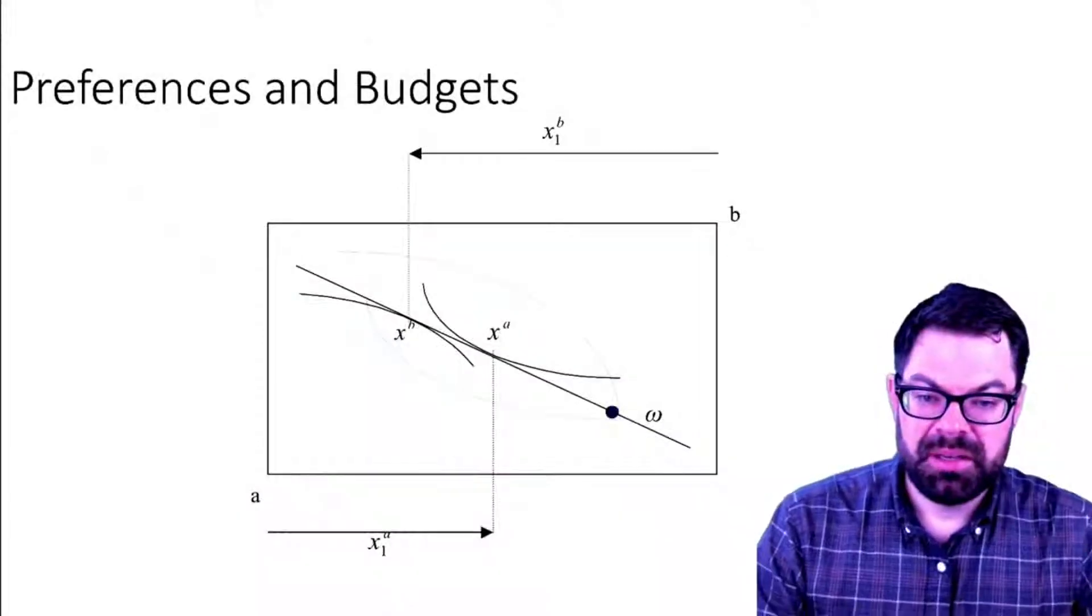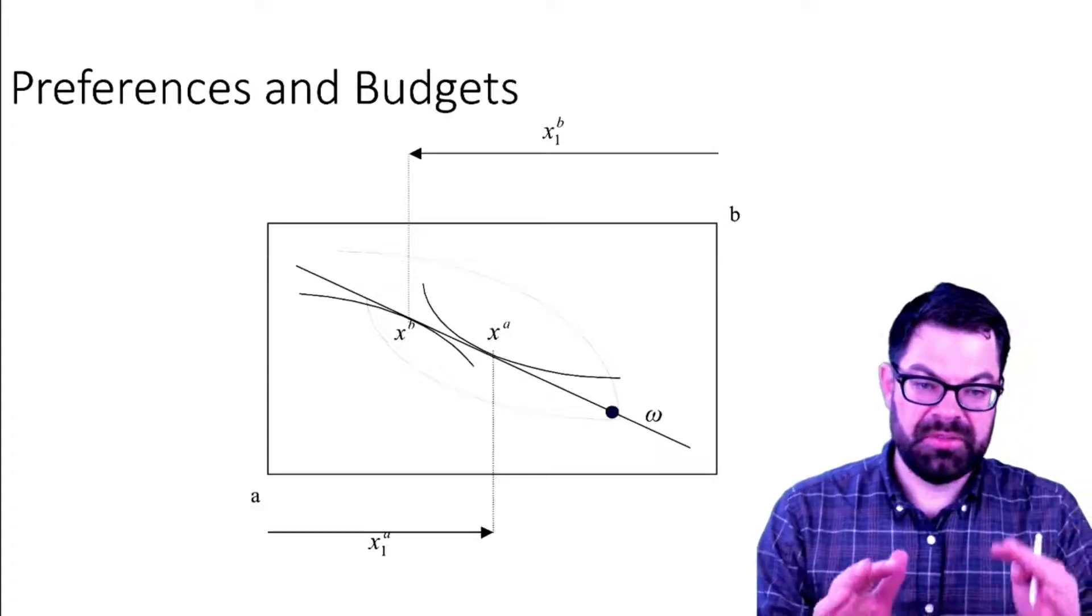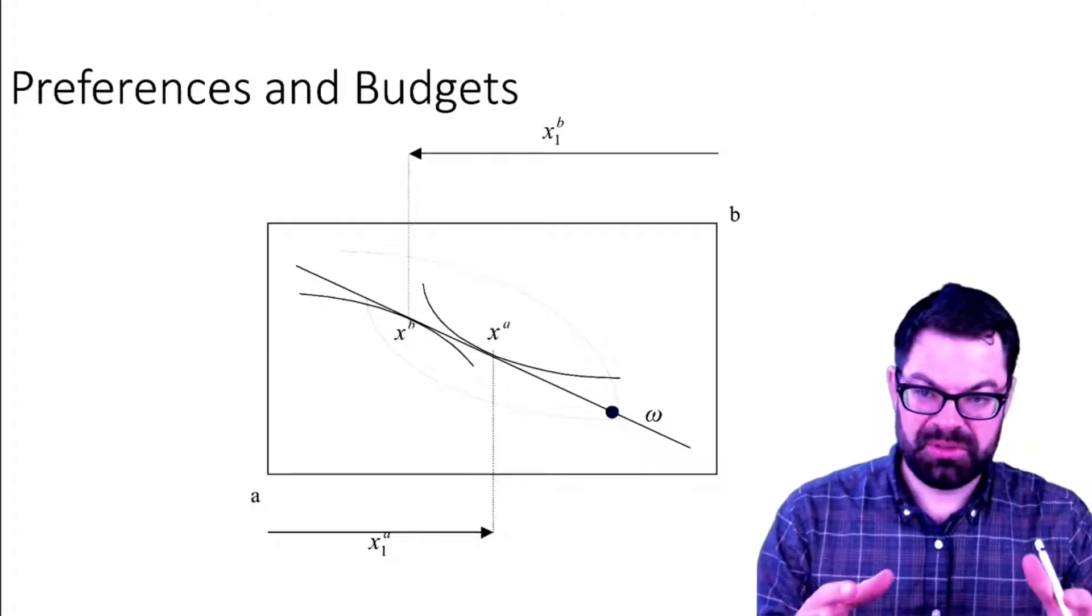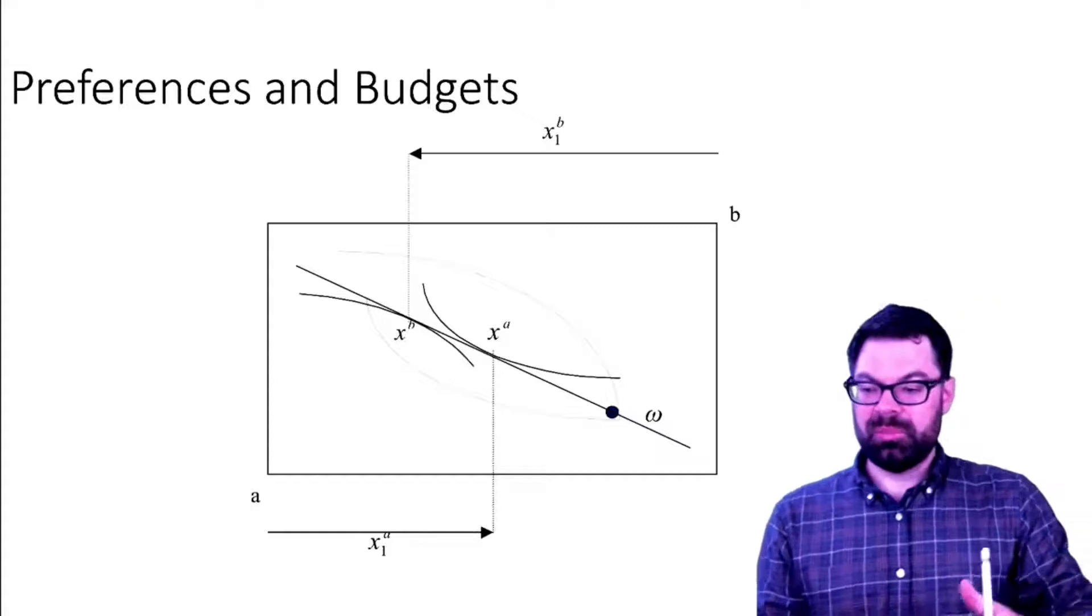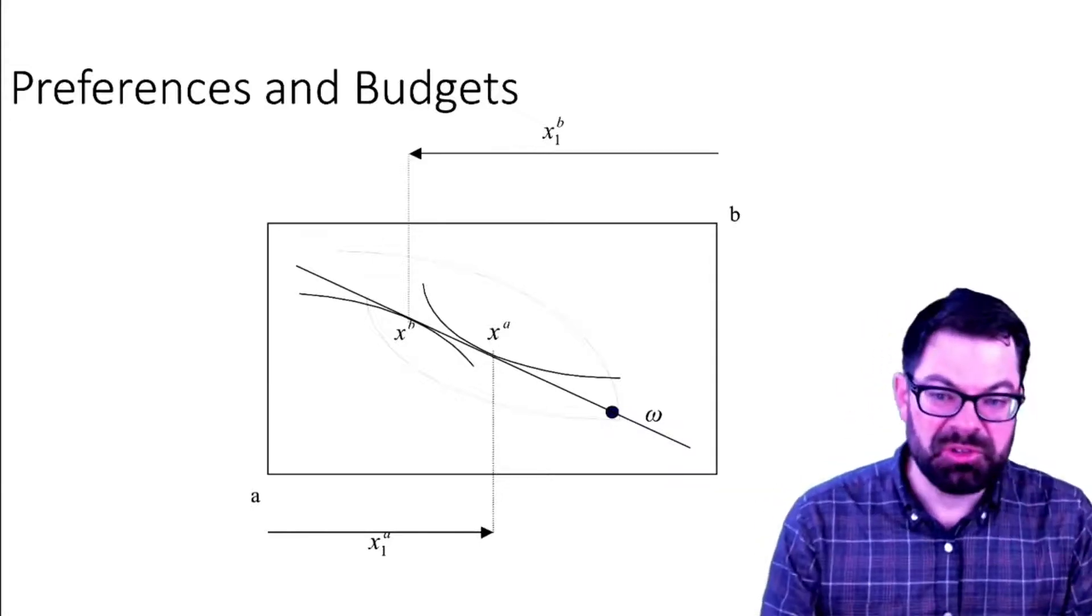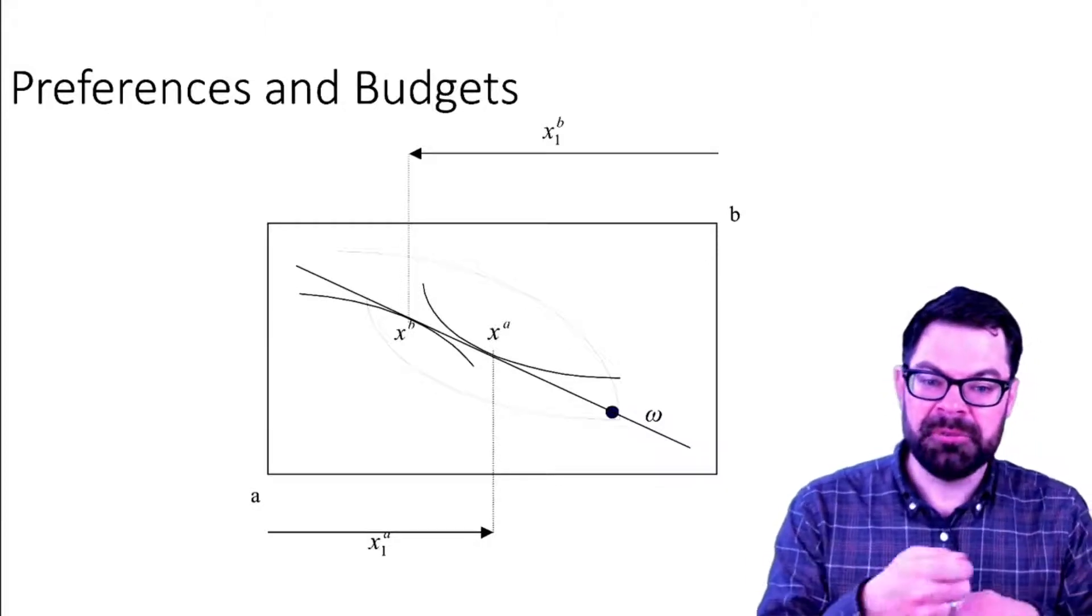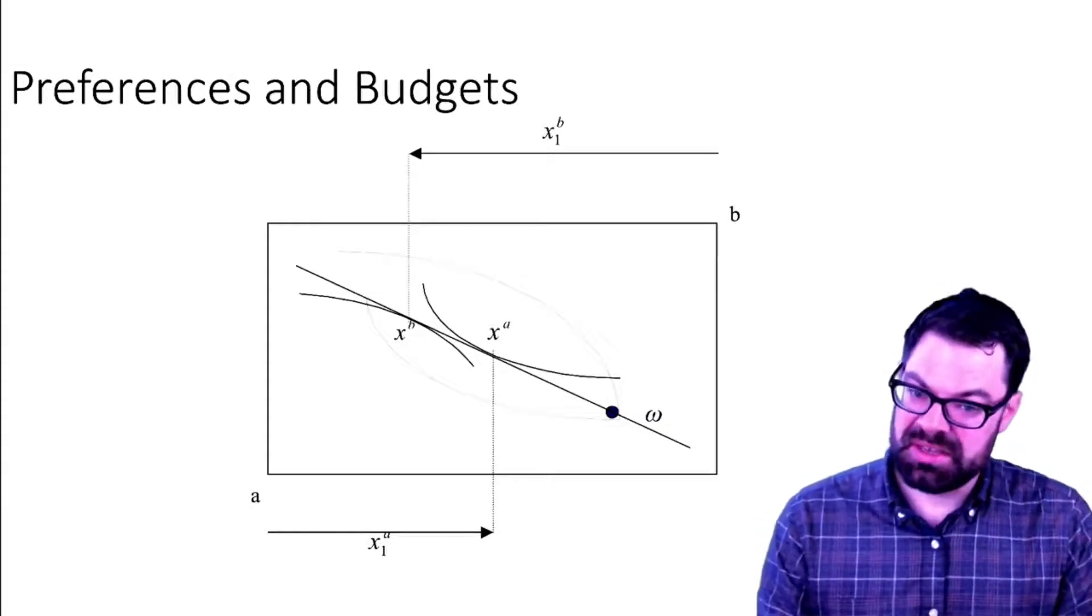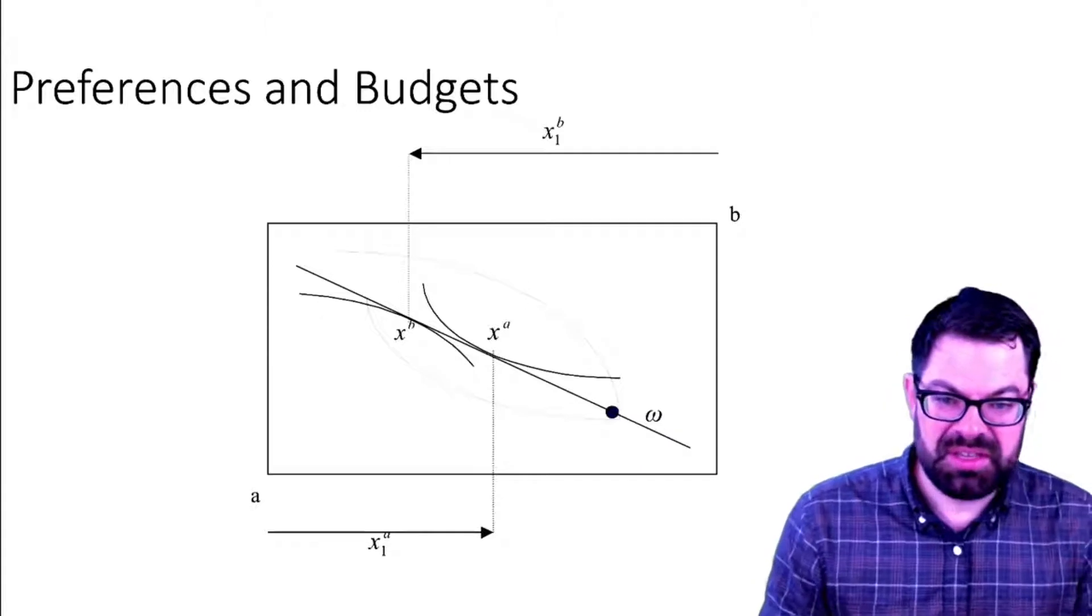In the last video we put together several parts of the toolbox that we need to analyze general equilibrium graphically. We have two market participants, the Edgeworth box that shows us the feasible consumption plans, both people's endowments, their preferences, and that's all in this Edgeworth box that you can see here.